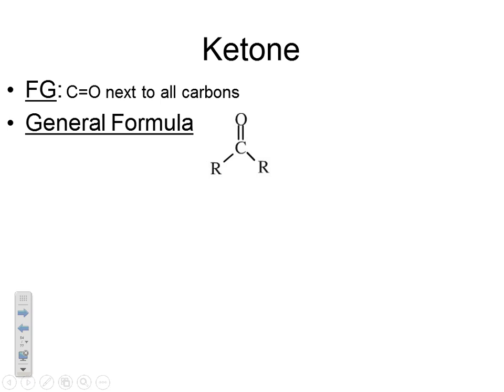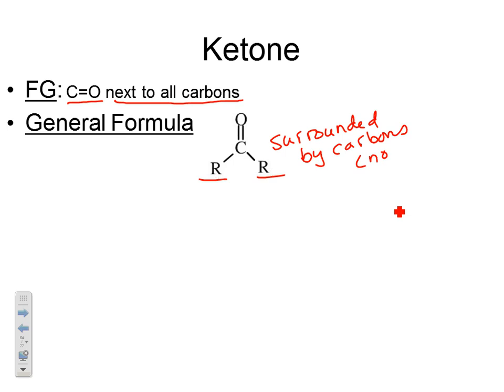The next functional group is the ketone, which is highly related to the aldehyde. The functional group of a ketone is C=O, just like an aldehyde — but unlike an aldehyde, it must be surrounded by carbons on all sides, not next to a hydrogen. The distinction between an aldehyde and a ketone: the C=O is now in the middle of the carbon chain.